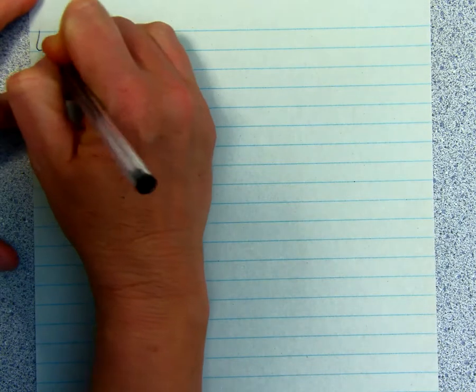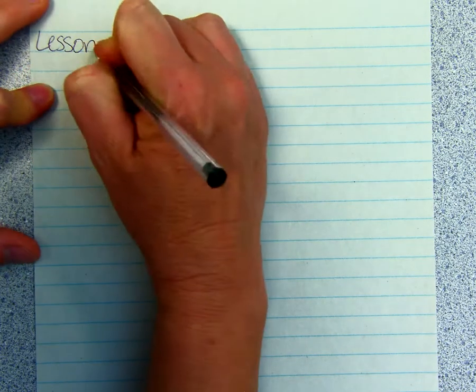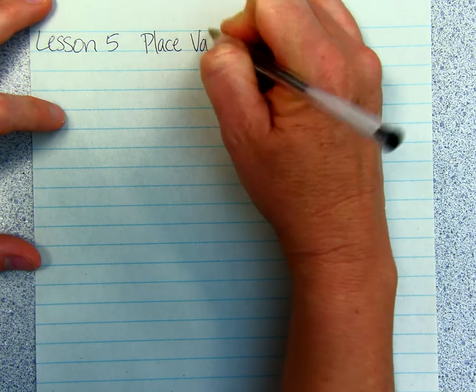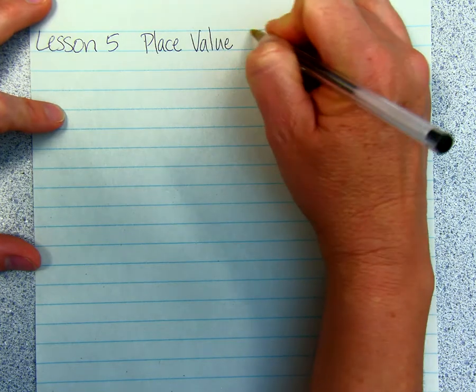Lesson 5, Place Value Through Hundred Trillions and Reading and Writing Whole Numbers. You will need a glue stick for this lesson as we're going to glue in our place value chart into our notebooks.